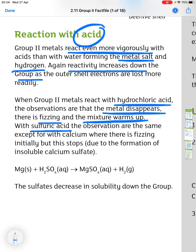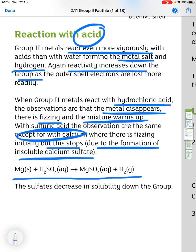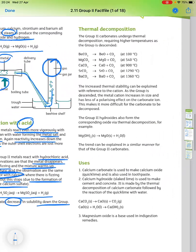With sulfuric acid, the observations are the same, except for with calcium where there is fizzing initially, but this stops due to the formation of insoluble calcium sulfate. And our example here is magnesium and sulfuric acid. It gives magnesium sulfate and hydrogen. And the sulfates decrease in solubility down the group.